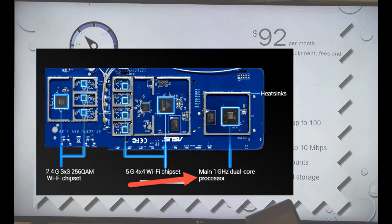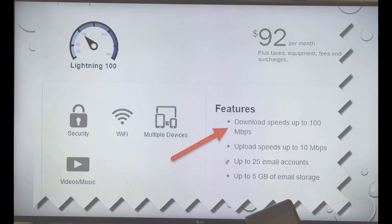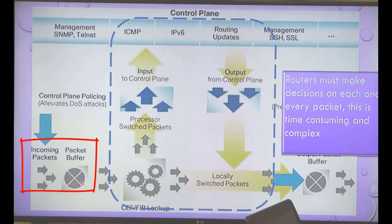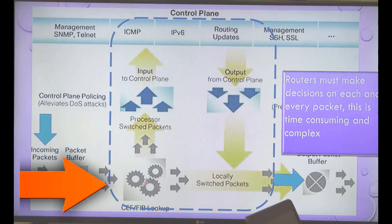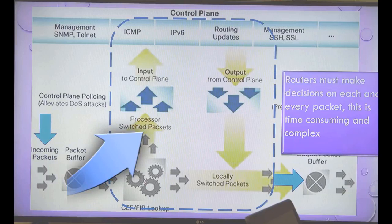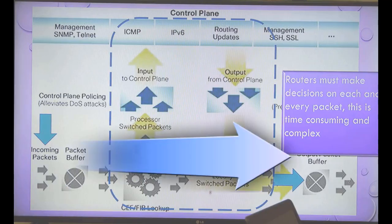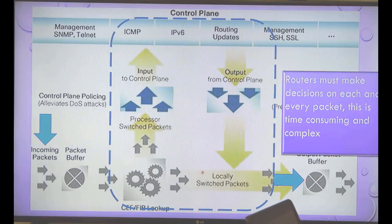A lot of people think they can upgrade to faster bandwidth and keep a cheap router — that won't work. Inside your router, incoming packets hit a packet buffer, then logic opens the packet, inspects it, looks at the destination IP, runs through firewalls and NAT, then it goes out through the control plane and out the interface. All of this takes time. Routers perform pretty intensive packet inspection, so they are not simple — they're very complex.